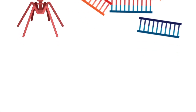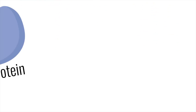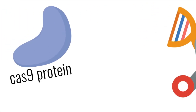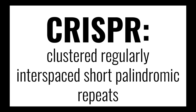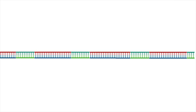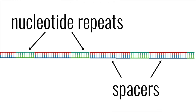Then, when the virus invades again, bacteria immediately use the Cas9 protein to cut the viral DNA, immediately disabling it. So let's dive more into the technical details and go back to what CRISPR stands for: Clustered Regularly Interspaced Short Palindromic Repeats. What this basically means is it's a specialized region of DNA with two distinct characteristics — the presence of nucleotide repeats and spacers.